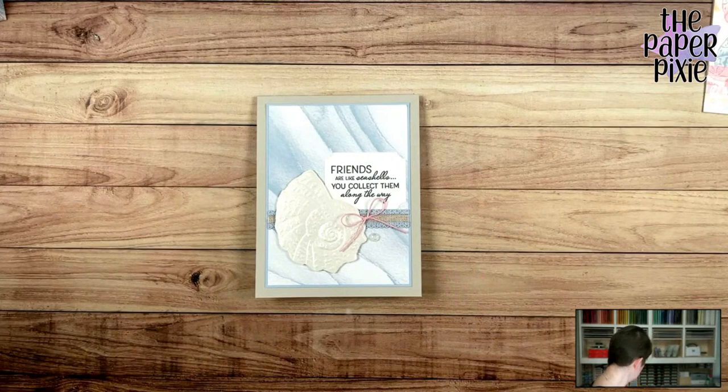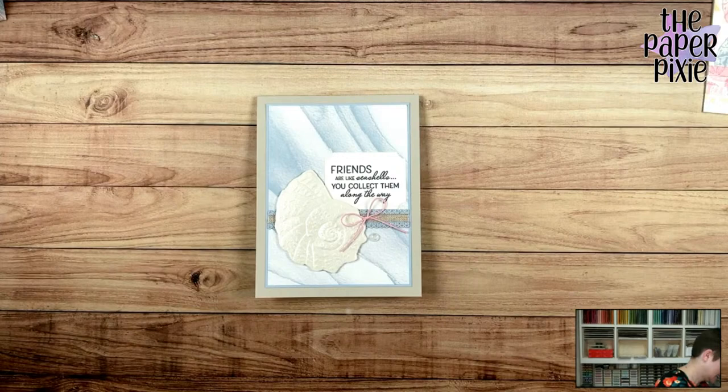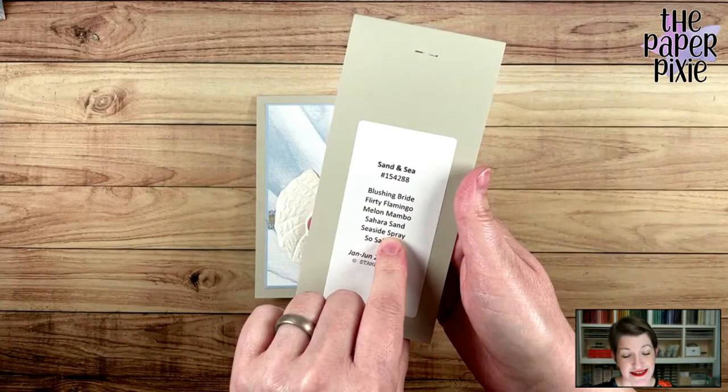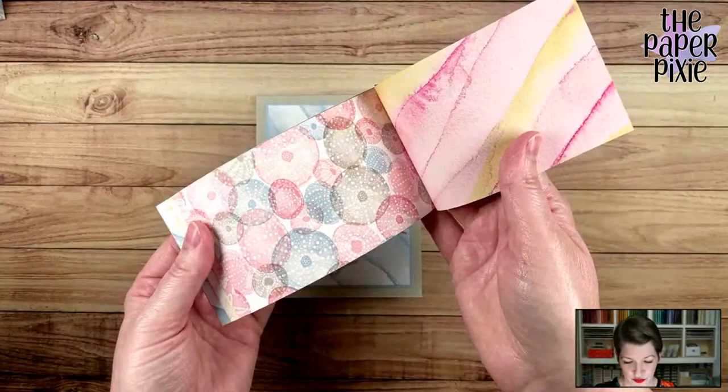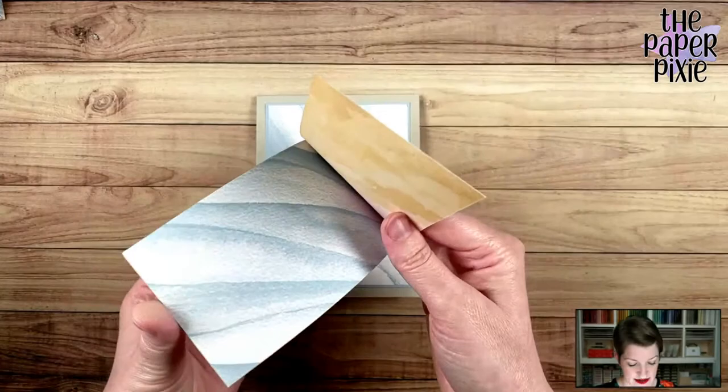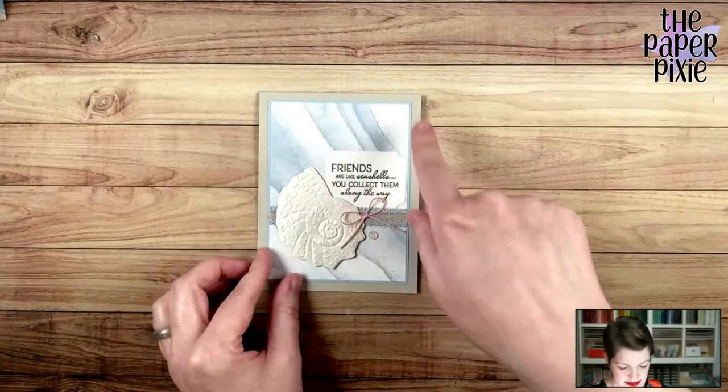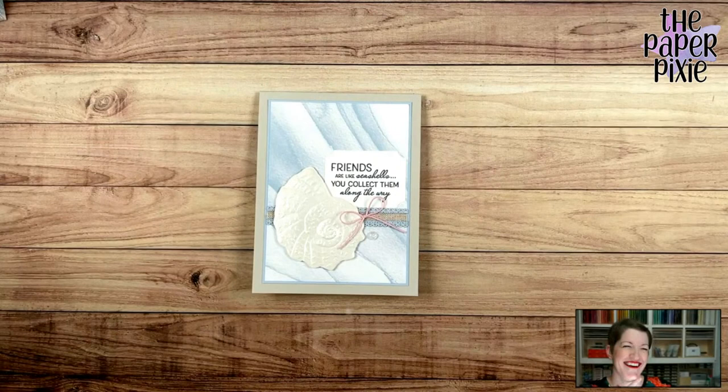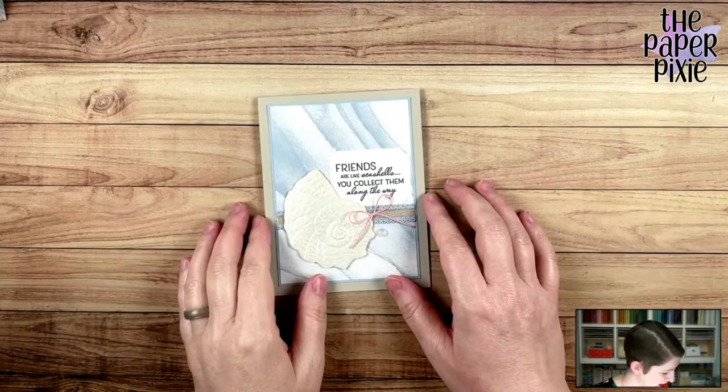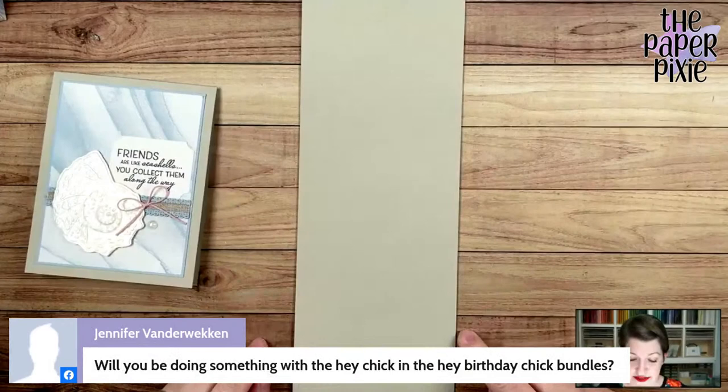We're going to start with a card base that is Sahara Sand. This is my little swatch book - we've got Blushing Bride, Flirty Flamingo, Melon Mambo, Sahara Sand, Seaside Spray, and Sew Saffron. I've got a piece of Sahara Sand that measures four and a quarter by 11. I've scored it at five and a half inches in half. I score and then turn that valley score line into a mountain.